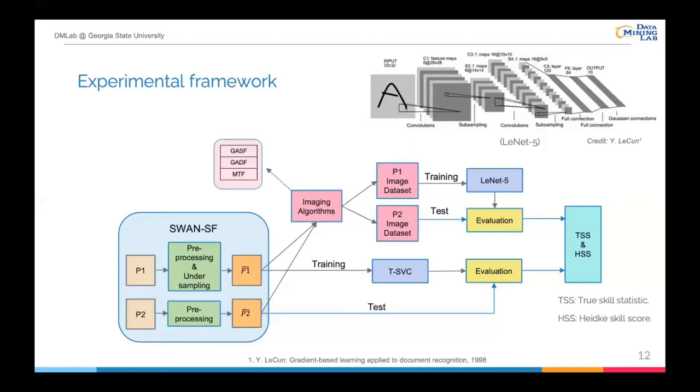This is the framework conducted in our experiments. We can see from the left side, partition 1 and partition 2 will go through same preprocessing, but the undersampling only applies to the partition 1. Next, three imaging algorithms will be applied to derive training and test image datasets. And the training image dataset will add inputs to train a NeuralNetFire model, which is a CNN-based neural network. On the other hand, we select SVM as a baseline classifier, since they have similar ability in the mathematical concept. Finally, the test dataset, partition 2, will evaluate different classifiers and report performance with TSS and HSS scores.